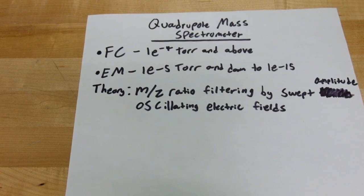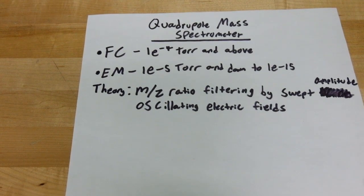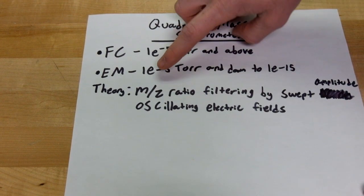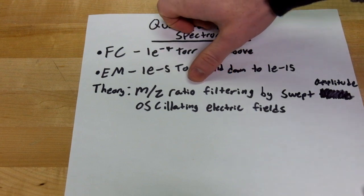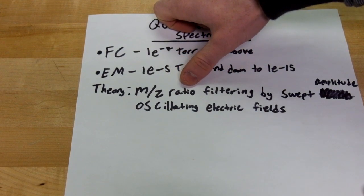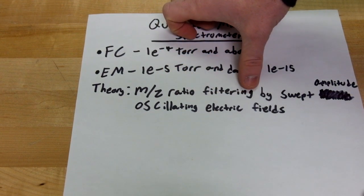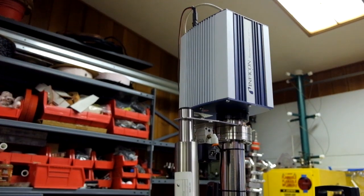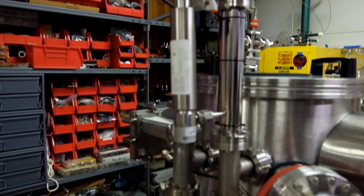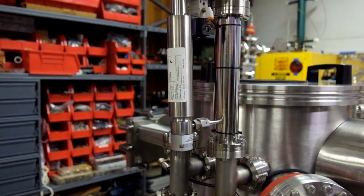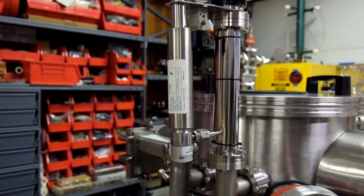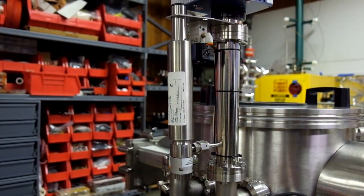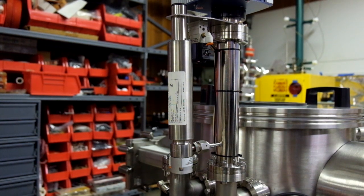I'll go over what's actually inside of it in a second, but basically what it does is separate ions by their mass-to-charge ratio by sweeping an electric field in the analyzer region of the device. Before I had this, the extent of my vacuum diagnostics were basically looking at a couple of vacuum gauges and saying it looks good enough — but that really doesn't tell you even a part of the whole picture.